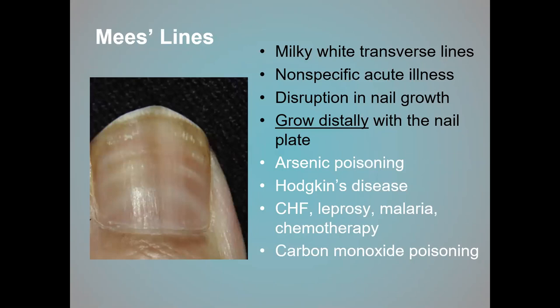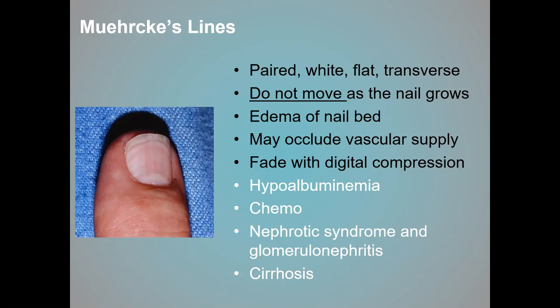There are also white milky transverse lines that can be due to several different things — they also grow distally within the nail plate, caused by a disruption in nail growth where the nail is paused, showing up as these white milky lines. Muehrcke's lines are also white flat transverse lines, but they don't move as the nail grows. If you see these and the person returns six weeks or twelve weeks later and they're exactly the same, it's a different type of line, representative of a problem within the nail bed itself, caused by specific illnesses.